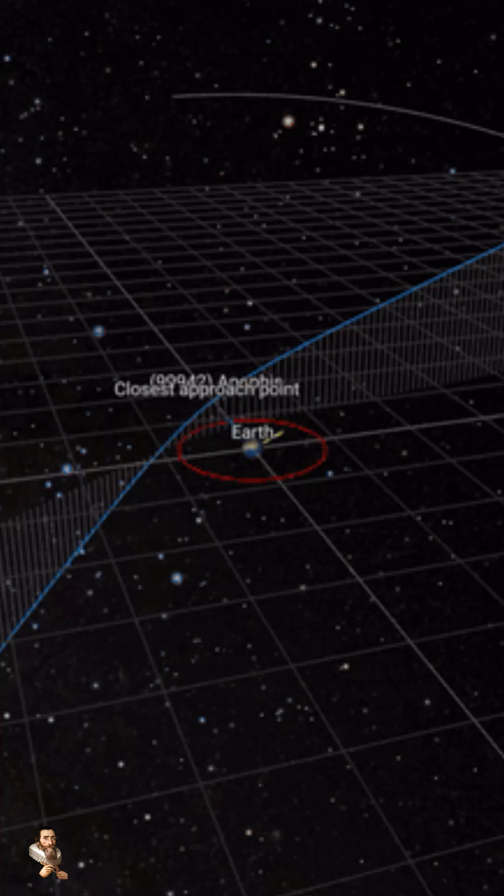At about 340 meters wide, this asteroid is about the size of the Empire State Building and was named for the Egyptian God of Chaos and Destruction.